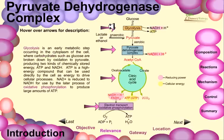Glycolysis is an early metabolic step occurring in the cytoplasm of the cell, where carbohydrates such as glucose are broken down by oxidation to pyruvate, producing two kinds of chemically stored energy: ATP and NADH. ATP is a high energy compound and can be used directly by the cell to drive cellular processes. NAD+ is reduced to NADH for use in later processes of oxidative phosphorylation to produce large amounts of ATP.